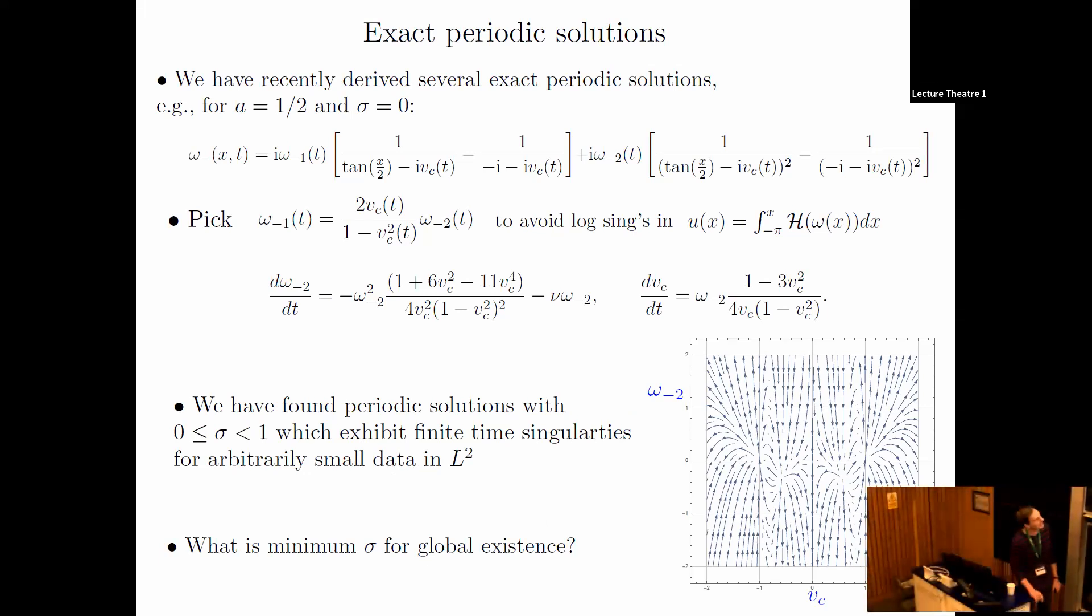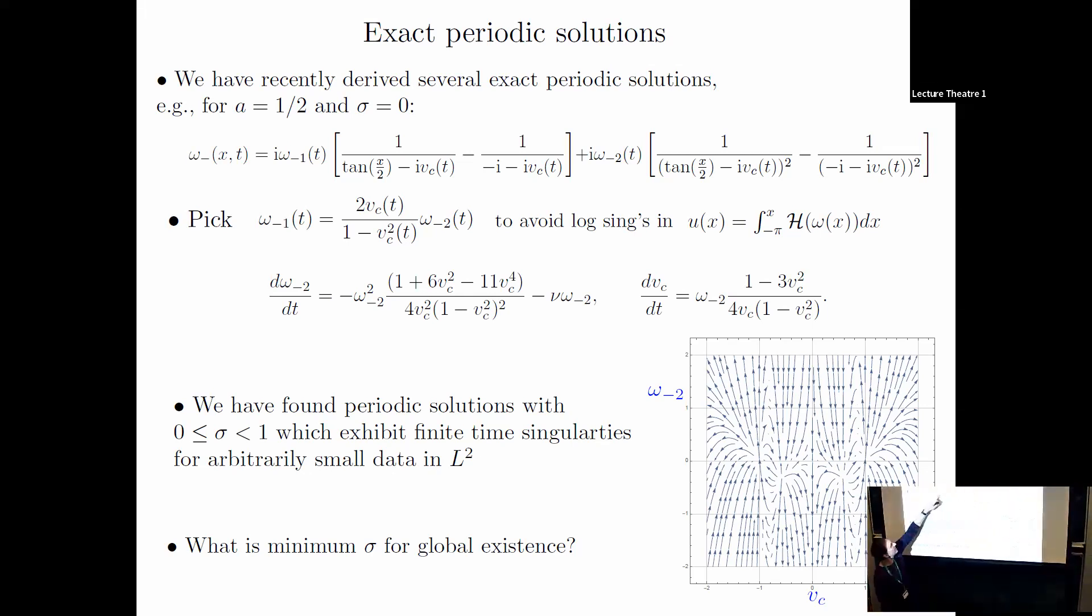We were able to get that by finding exact periodic solutions. We adapted the method I used on the real line. These exact periodic solutions involve looking for poles—double and single poles with a periodic form, movable singularities. Things get way more complicated. When you integrate these, you get logs. The velocity is an integral of that, so you get logs. But you can't have logs in exact solutions. The idea is to combine these two types to get the logs to cancel out. That gives you a condition on the amplitudes.